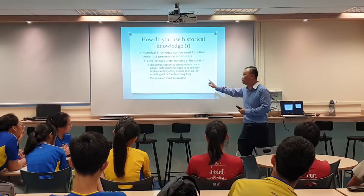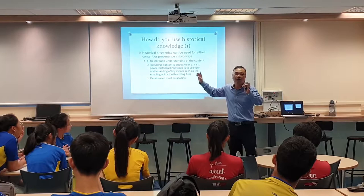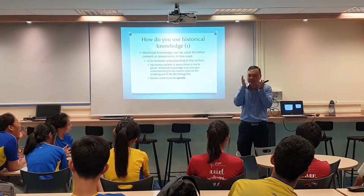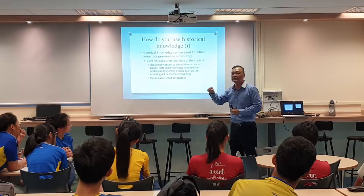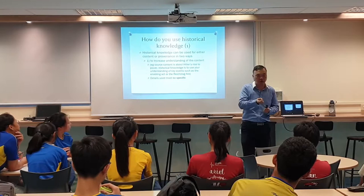So you will add in your contextual knowledge in that manner. This is what we call using historical knowledge to increase the understanding of the content. That has always been the way that you're doing it. And when I talk about contextual knowledge, it must be specific. You cannot just say 'the source says this, from what I learned in my textbook, this is true' and then paraphrase the whole entire thing again — that is not specific information. If you talk about Hitler's rise to power in the source, you need to focus on what were some of the key events.